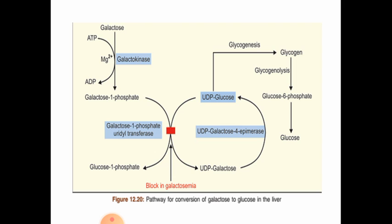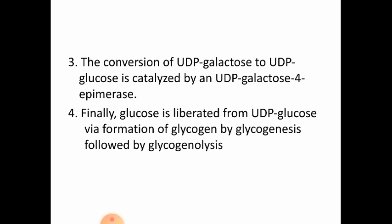The enzyme defect in galactosemia is due to the deficiency of galactose-1-phosphate uridyl transferase. Finally, glucose is liberated from UDP glucose via formation of glycogen by glycogenesis, and then released by glycogenolysis, which is the breakdown of glycogen.